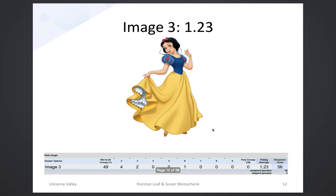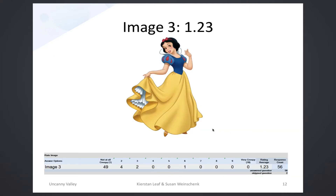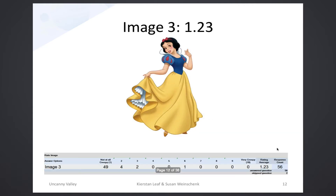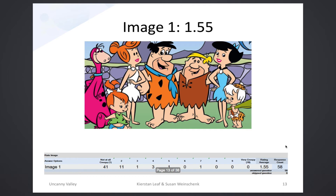The images are presented in order from least creepy to most creepy. The image number refers to the order it was placed in the survey. Our least creepy image had 49 people rate it not creepy at all, nobody rated it a 10, and the average rating was 1.23. The next image had an average of 1.55, with 41 people rating it not creepy at all and again nobody rating it very creepy.